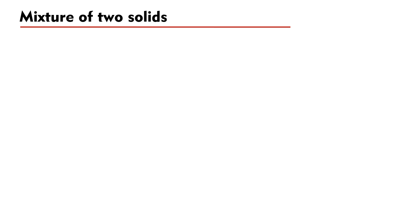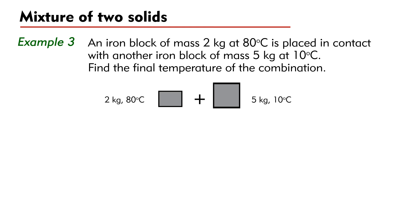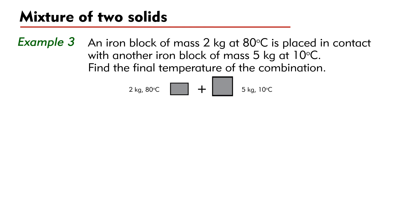Finally, let's consider the mixture of two solid objects. Example 3: An iron block of mass 2 kg at 80 degrees Celsius is placed in contact with another iron block of mass 5 kg at 10 degrees Celsius. Find the final temperature of the combination.